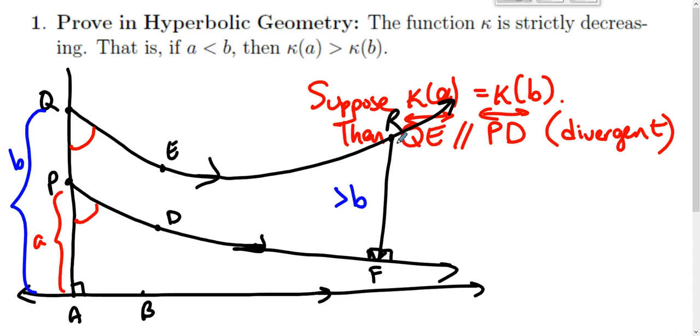Then we drop the perpendicular to AB. It must be that RH is bigger than RF. And if RH is bigger than RF, then the distance from R to AB is greater than b. And you proved in a discussion that that can't be. If QE is a limiting parallel, then the distances have to get smaller with respect to AB as we go. So the kappa function is strictly decreasing.